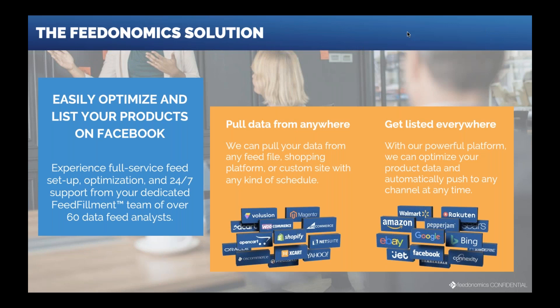The second component is optimization. After we get your product data into Feedonomics, we can optimize any attribute we have access to. At a high level, any kind of data transformation you can describe in English, we can actually do. The last step is creating recurring feeds that we send to Facebook. We do this for our clients on a full-service basis — we do the heavy lifting of bringing the data in, optimizing it, exporting it, and troubleshooting when issues arise.